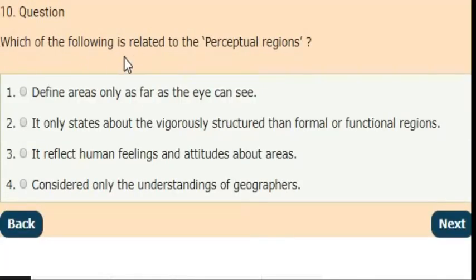Last question: which of the following is related to perceptual regions? Options are: define areas only as far as the eye can see; second statement: it only states about the vigorously structured than formal or functional regions; third: it reflects human feelings and attitudes about areas; fourth: considered only the understandings of geographers. The correct answer is option 3. It reflects human feelings and attitudes about areas.